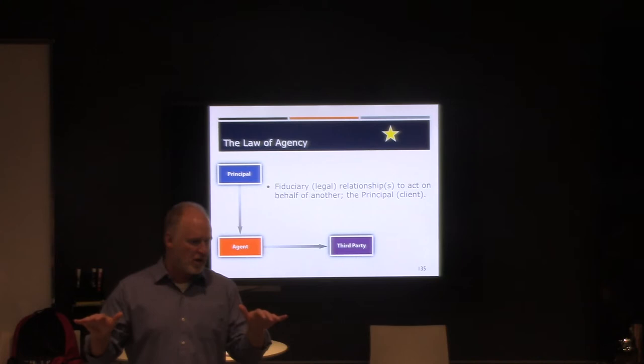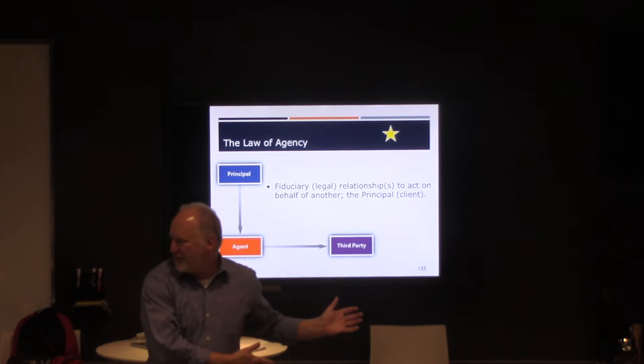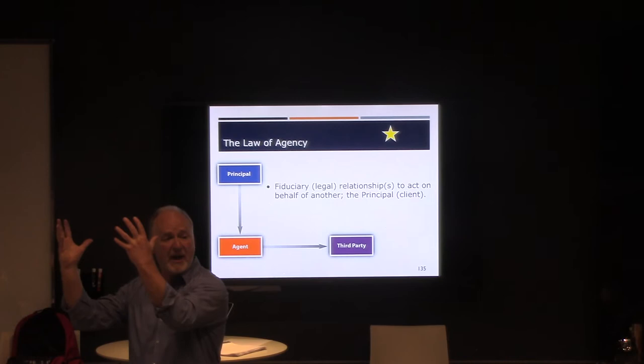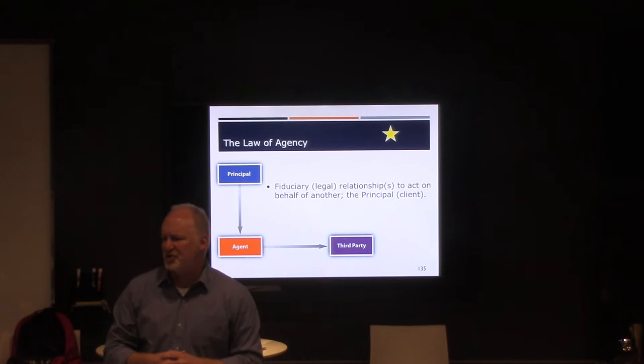Your real estate license is a certificate of public trust. So therefore, even though I'm being loyal to my client, doesn't mean I cheat the other guy. Right? I have to be honest and fair to them as well. So I owe some things to my client. I owe a different set of things to a customer. I don't have to be loyal to a customer. But I can't cheat them.